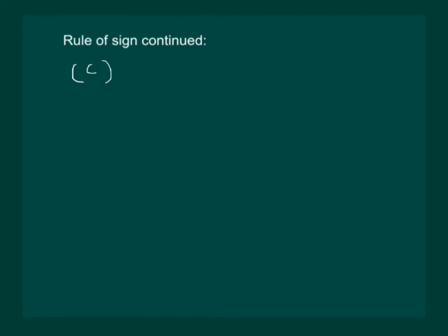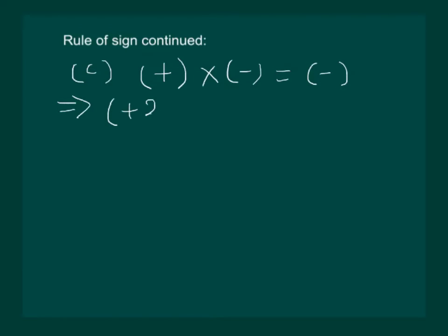Rule C: If we multiply a positive number with a negative number, the product will be a negative number. This implies, if we multiply plus 2 with minus 5, we will get minus 10.